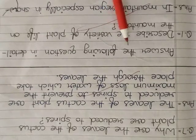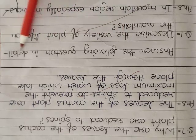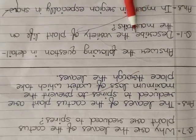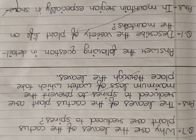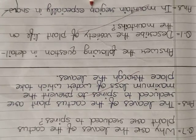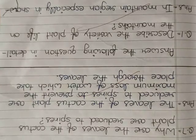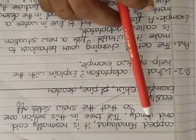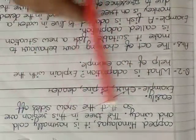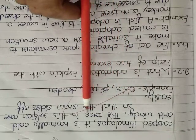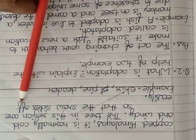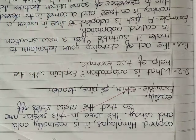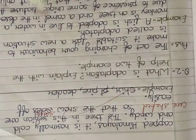Now come on to next exercise that is answer the following question in detail. Question number 1 Describe the variety of plant life on the mountains. Answer is In mountain region especially in snow capped Himalayas. It is normally cold and windy. The tree in this region are so that the snow slides off easily.